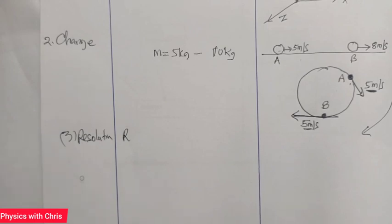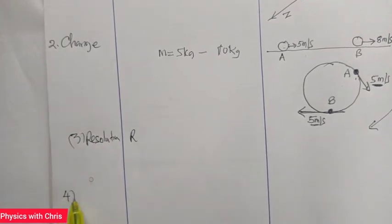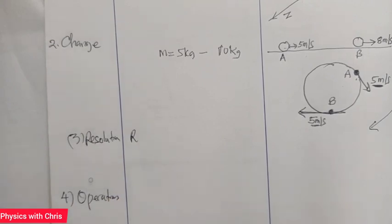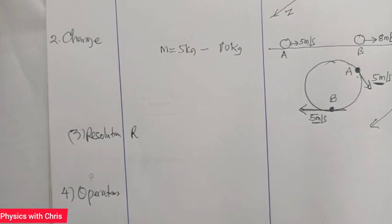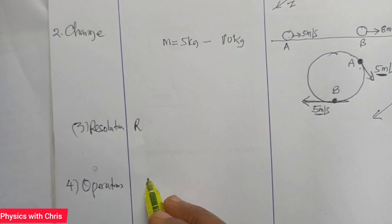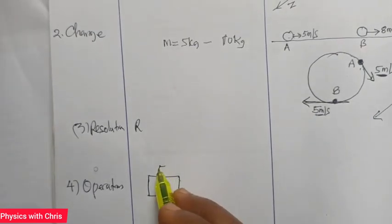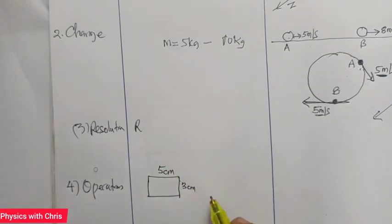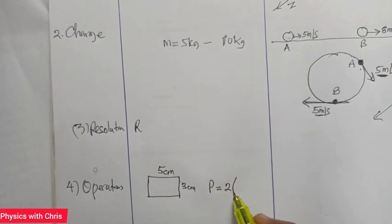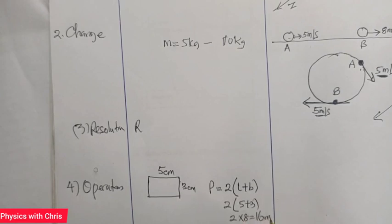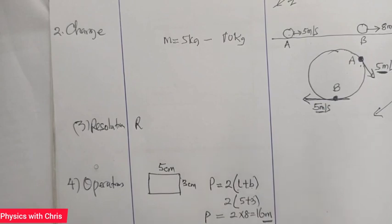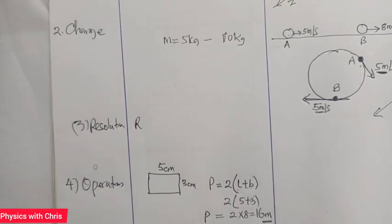The fourth difference is operations. Any mathematical operation carried out among two or more scalar quantities will give a scalar result. For instance, finding the perimeter of a shape with length 5 cm and width 3 cm: using 2 times (length plus breadth) gives 2 times 8, which equals 16. Since we added two scalar quantities to get the perimeter, the perimeter is also a scalar. So when you add, multiply, or divide two scalar quantities, the result is a scalar.